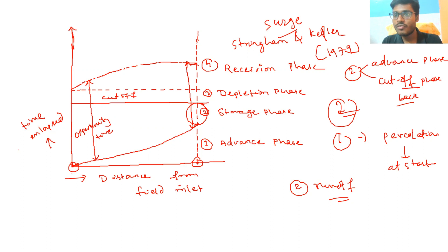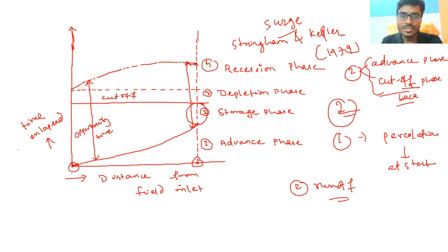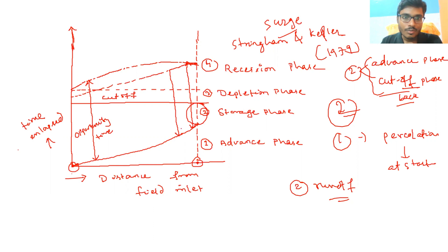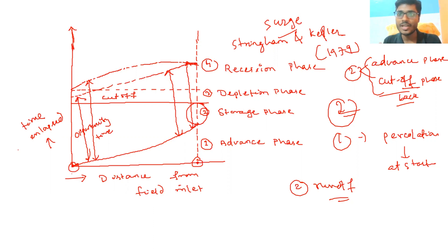So in surge irrigation there are two phases: the advanced phase and the cutback phase. Due to these phases, on the graph the opportunity time will be the same at the end of the field and at the start of the field. Under surge irrigation, the opportunity time is equal or uniform throughout the field — that is why surge irrigation can prevent percolation loss.